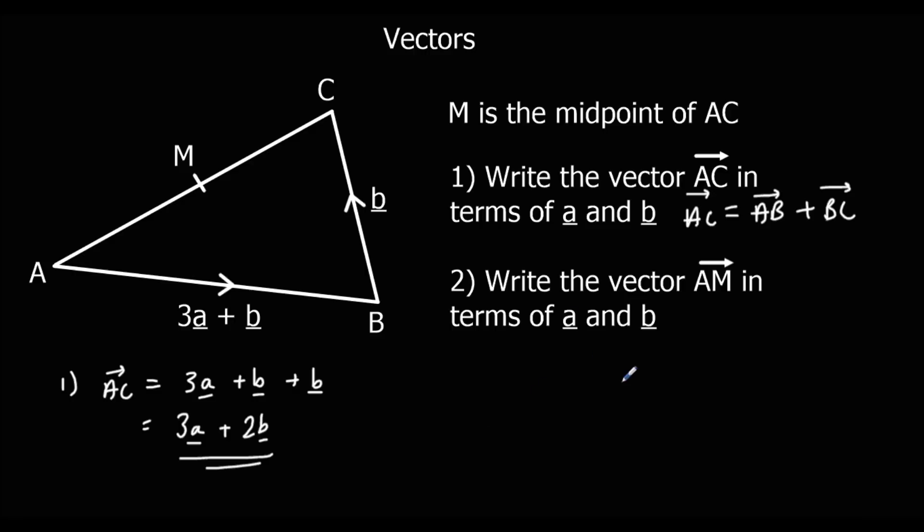Okay, question two. Write down the vector A to M in terms of a and b. So A to M is half of A to C.